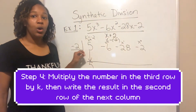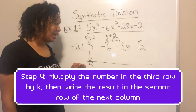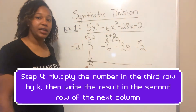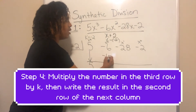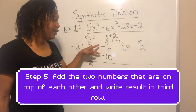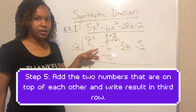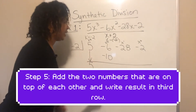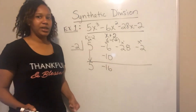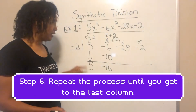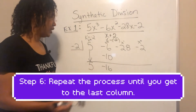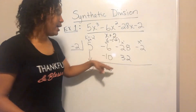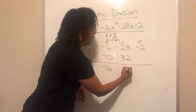Here's where the strategy comes in. Every time a number is in the third row, multiply it by k and write the result in the next column of the second row. So negative 2 times 5 is negative 10 — write that in the second row. Every time two numbers are on top of each other, add them. Negative 6 plus negative 10 is negative 16. Then negative 2 times negative 16 is positive 32, written in the next column. Negative 28 plus 32 is 4.